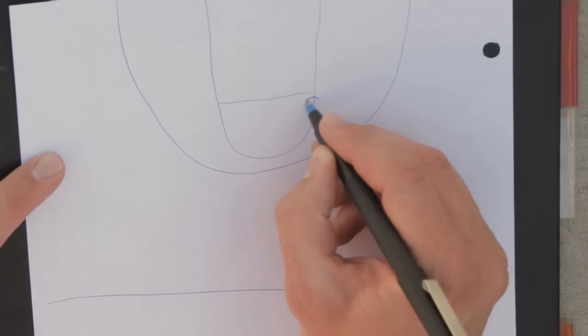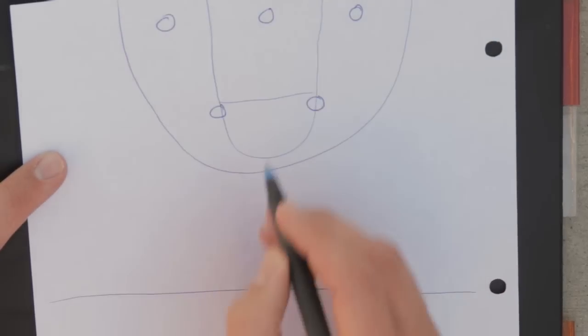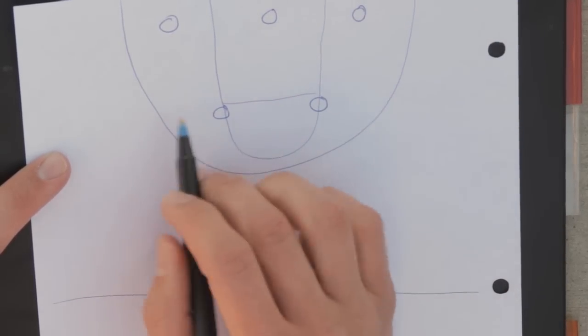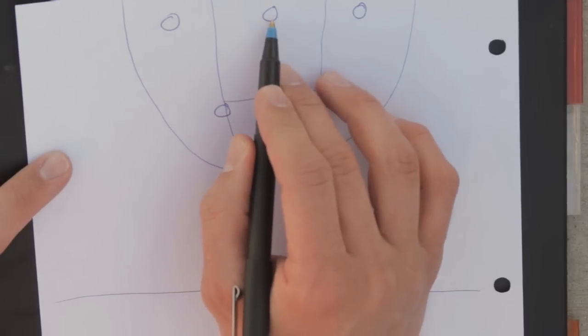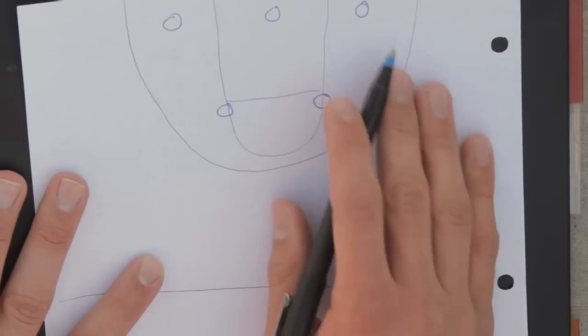The first one is a basic 2-3 zone defense. You have your two guards up at the top here and here at the elbows, your big man in the middle, and then your two guys, your three and four position down low.